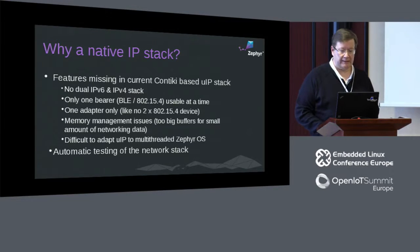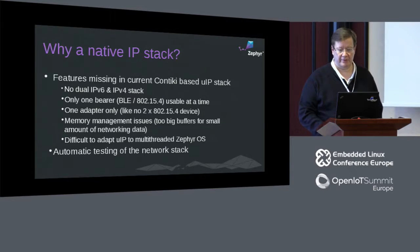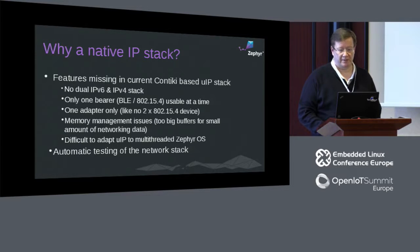The legacy stack uses so-called big memory buffers. Each buffer is 1,280 bytes long in order to be able to receive one full IPv6 packet. This is quite suboptimal, as typically the network packets in IoT protocols like CoAP are very small — way under 100 bytes.